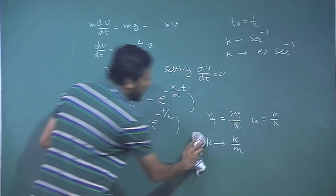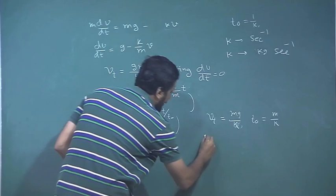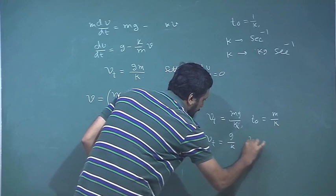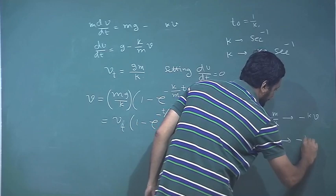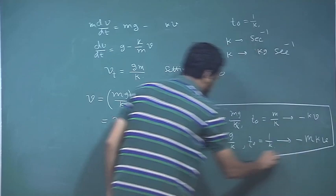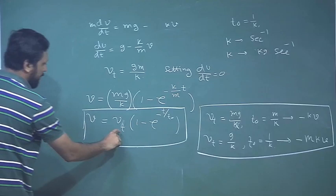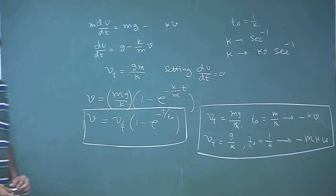In one case we use v_t = mg/k and t_0 = m/k, and in the other case we use v_t = g/k and t_0 = 1/k. The first applies when the drag force is given as -mkv, and the second when the drag force is -kv. The final equation form is the same; only the values of v_t and t_0 change.